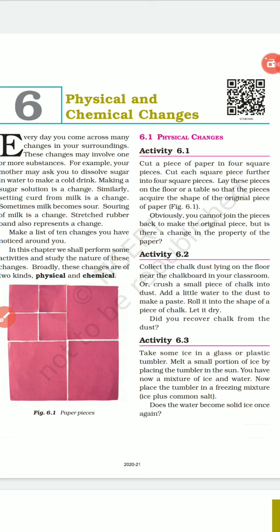So what are physical and chemical changes? A change in which a substance undergoes a change in its physical properties like shape, dimensions, color, or state, but no new substance is formed, is called a physical change.